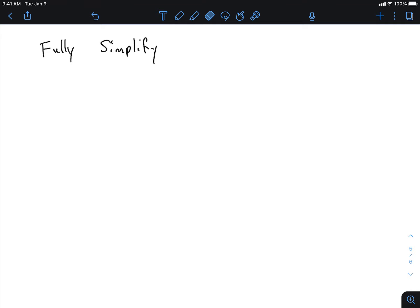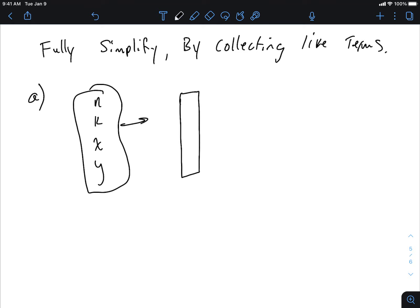It's going to say fully simplify by collecting like terms. So then you're going to see a question much like what we just finished doing. We could make it up, and again, n, k, x, y, these are all variables. They're just the rods. The numbers will always be the little squares.